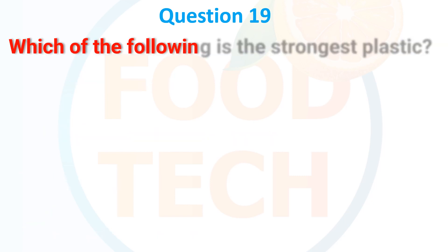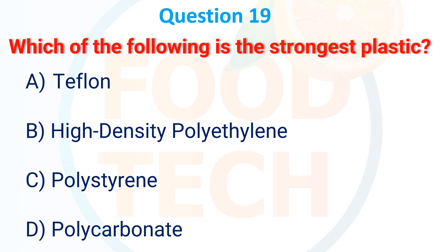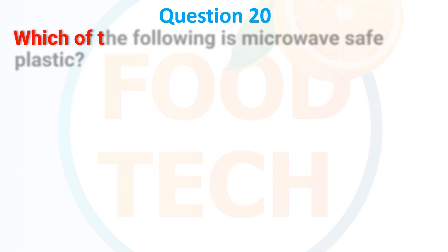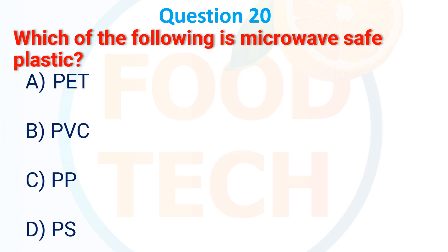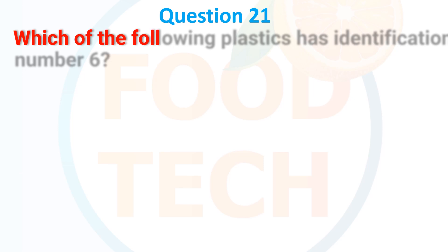Which of the following is the strongest plastic? A) Teflon, B) High-density polyethylene, C) Polystyrene, D) Polycarbonate. The answer is Polycarbonate. Which of the following is a microwave-safe plastic?